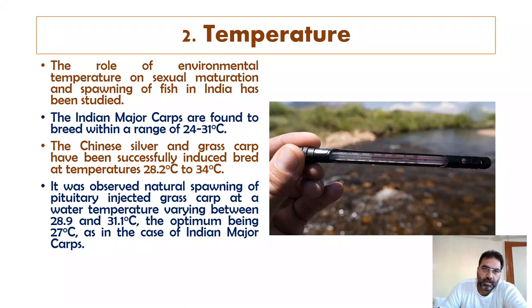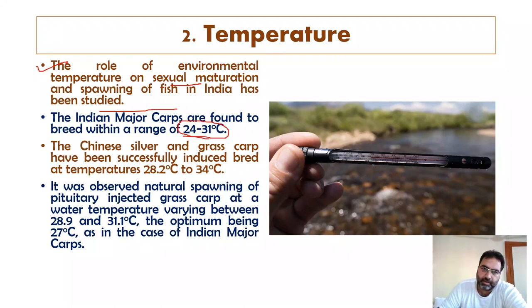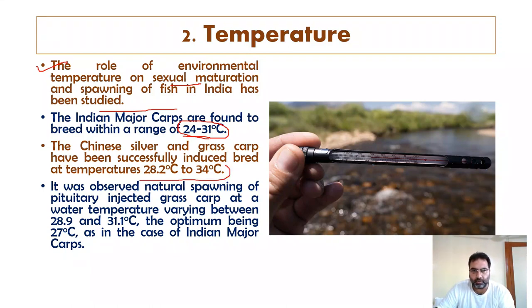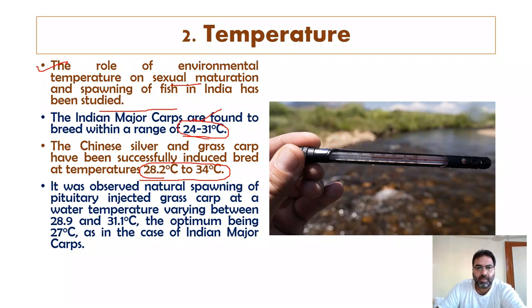Temperature plays an important role in sexual maturation and spawning. In India, Indian Major Carps (IMCs) were found to breed within a temperature range of 24 to 31°C. Chinese silver carp and grass carp have been successfully induced to breed at temperatures of 28 to 34°C, and Chinese carps were successfully induced to breed at 28.2°C down to 24°C.